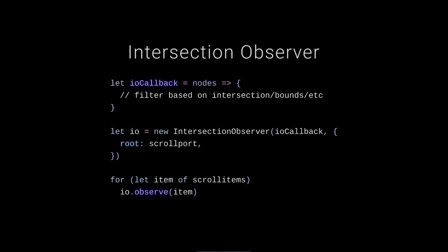Here's using Intersection Observer to discover what's in view. You create an IntersectionObserver callback that receives all the nodes you're watching. You target a scroll port, observe all its items, and as the scroller is interacted with you get a callback. Here's the usage: loop through items in a scroll port with io.observe(item). Create a new IntersectionObserver, pass the callback, tell it which scroller to watch, and observe all items.